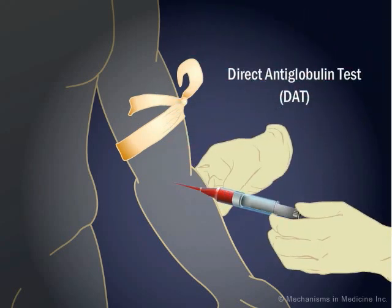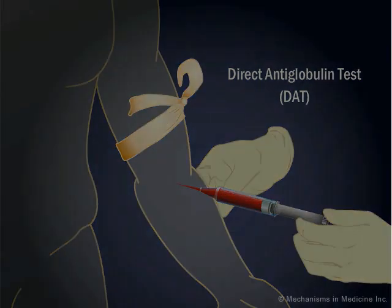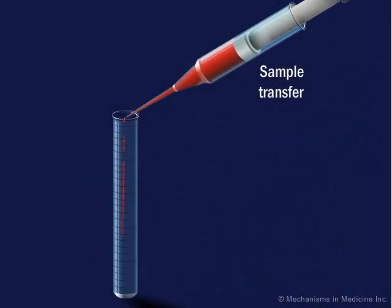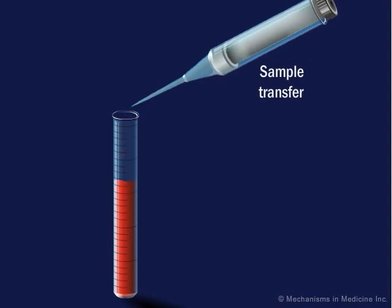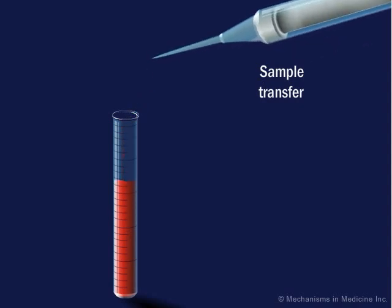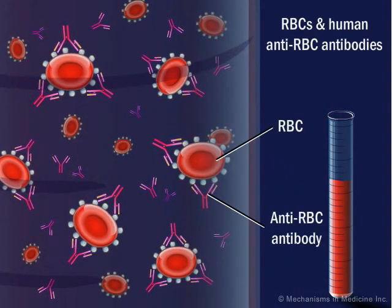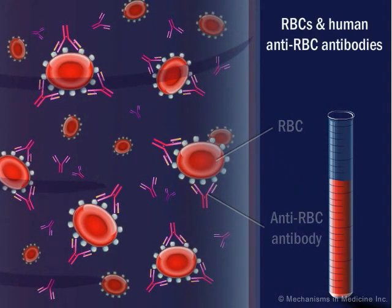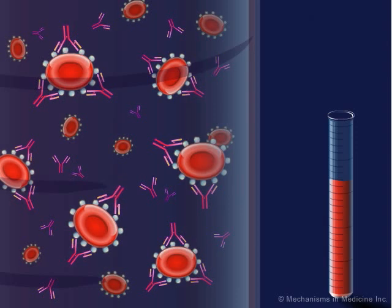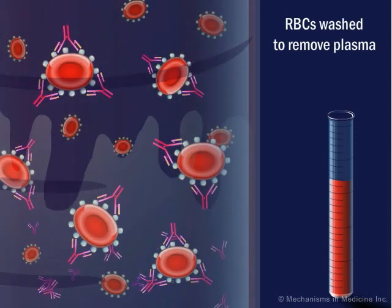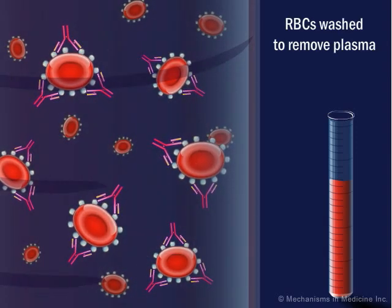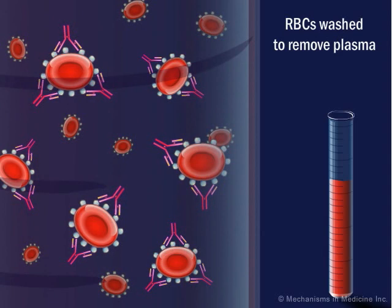A blood sample must be drawn. The patient's red blood cells may have antibodies and other complement system factors on the surface of some of the red blood cells, abbreviated as RBCs in this animation. The blood sample is washed to remove the patient's plasma while leaving the red blood cells intact with their attached antibodies.